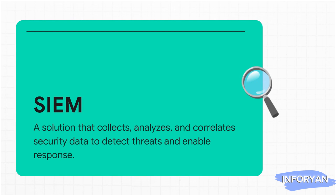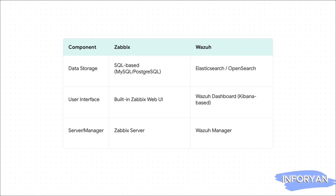You're going to hear the acronym SIEM a lot when people talk about Wazuh. All it really means is that it's a smart system — it's not just gathering data, it's connecting the dots between security events from all over your network to spot threats that you'd otherwise miss. It's about finding the needle in the haystack. Architecturally, they're also built on totally different philosophies. Zabbix uses a traditional SQL database, which is super efficient for storing structured data like performance metrics over time. Wazuh is built on something called the Elastic Stack, which gives it insane search capabilities — exactly what you need when you're hunting for a single malicious event in mountains of log data.